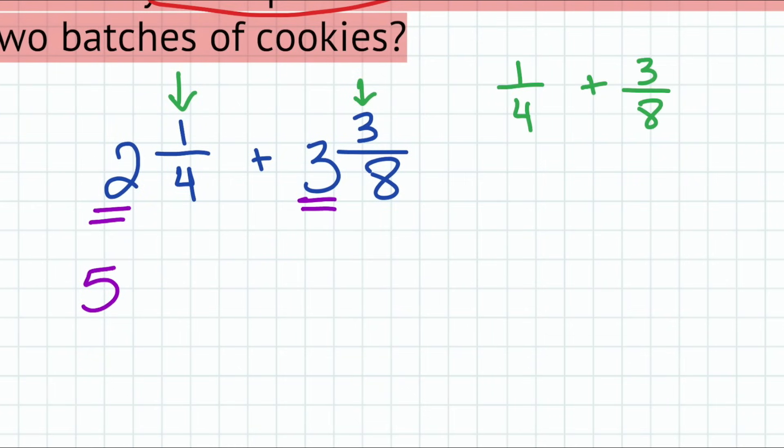So one quarter plus three eighths. And this isn't going to be terribly difficult because we take a look here and we say, four can definitely go into eight. Remember, we need the same denominator. Four can definitely go into eight. I don't have to change both of the fractions, just this one right over here. So what I'll do is I'll multiply the numerator and denominator by two. Whatever you do to the bottom, you do to the top.